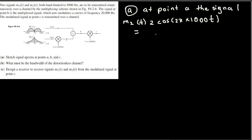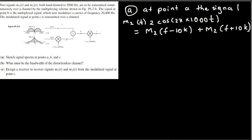In the frequency domain, m2(t) modulated at 10kHz gives components at M(f - 10k) and M(f + 10k) — shifting 10k to the right and left. Then both signals enter the summation: m2 is shifted 10k to the right and left, while m1 has no shift and comes through directly, adding with the modulated m2.